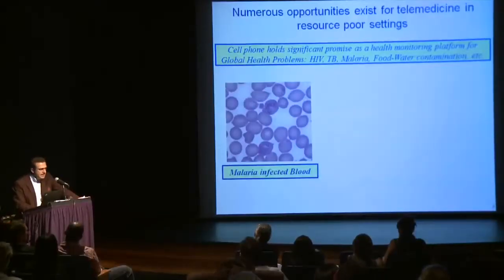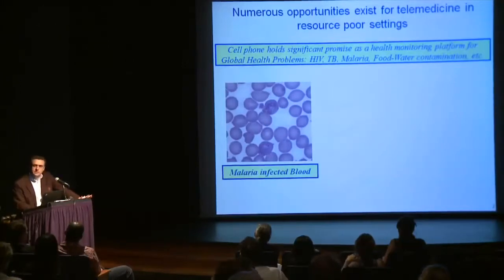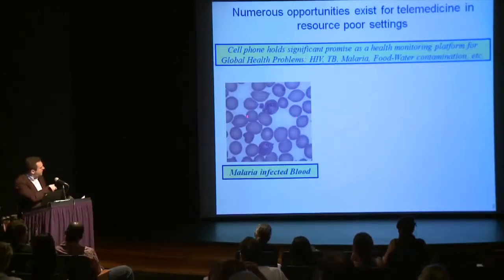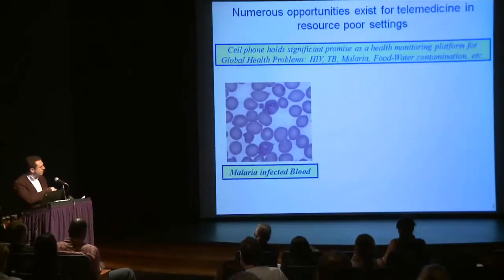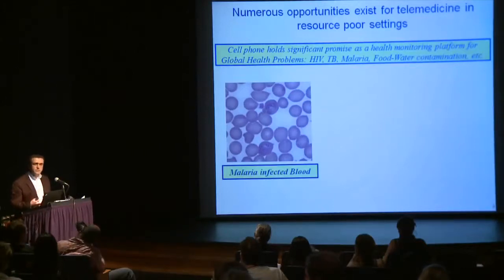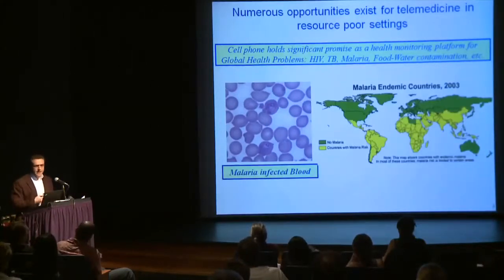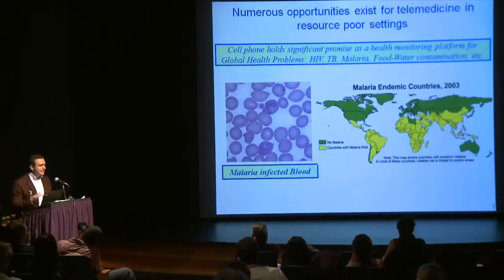Imagine that you had a technology that could convert your cell phone into a microscope, into something that can look at blood cells. Then you can potentially screen for malaria. What I'm showing here is actually a blood smear — these are blood cells. Just like using a regular microscope, you could look at these cells using your cell phone or a device that attaches to it to do microscopy in field settings, like in Africa. You could diagnose malaria and help all these countries highlighted in yellow, most of which are living in resource-poor conditions.